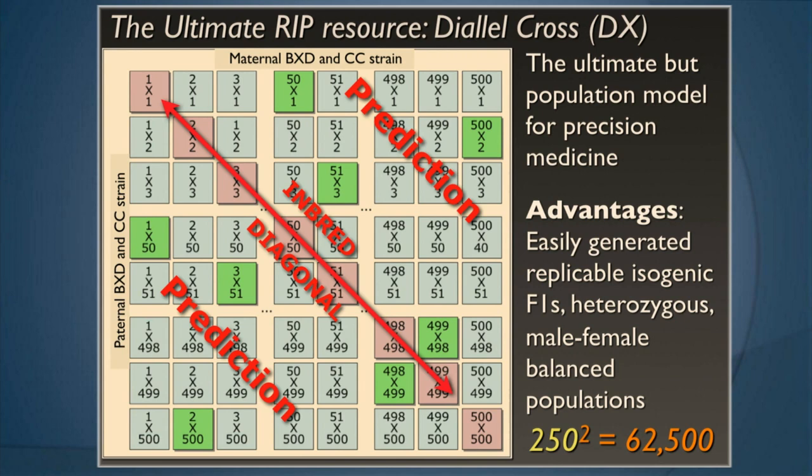We need to be able to predict susceptibility earlier so that we can reduce the bills and focus on health care rather than medical care. That, in a nutshell, is what the diallel cross and these replicable isogenic populations are about.